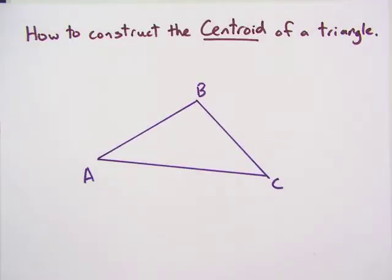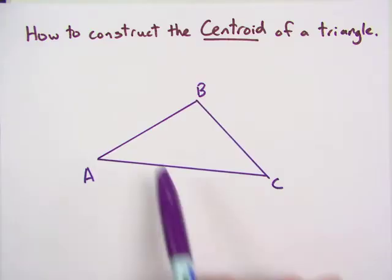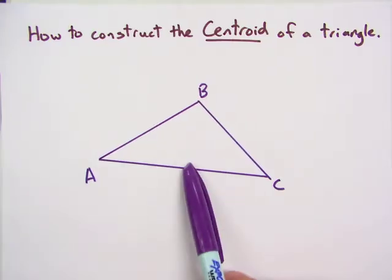All right, so we're going to construct the centroid here of triangle ABC. And since we know the centroid is where the medians intersect, we basically need to find the midpoint of two of these sides.